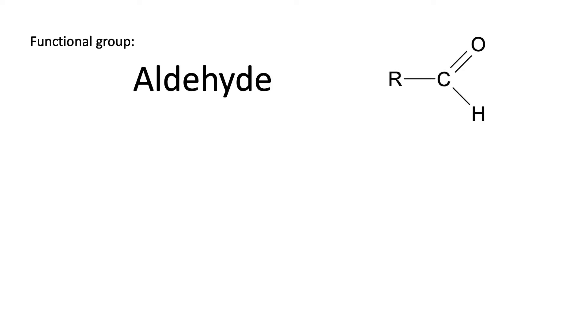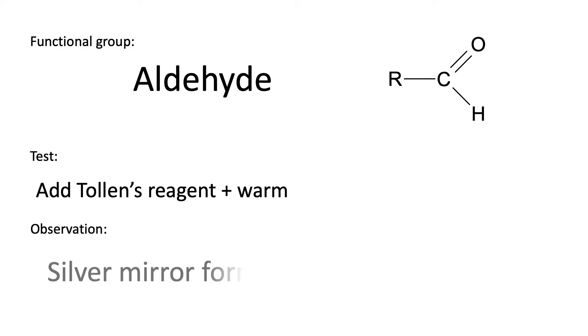The next functional group aldehyde has two tests that we need to be aware of. First of all we can add Tollens reagent and warm. The observation we get here is that a silver mirror forms. A black colour precipitate is also an acceptable positive result in this test, but in an exam it is easiest to simply say a silver mirror forms as our observation here.